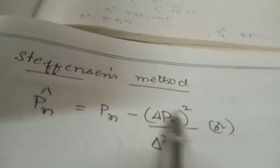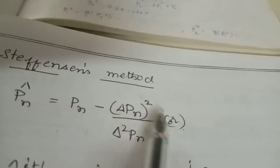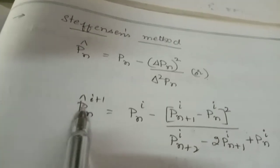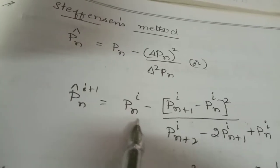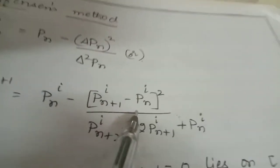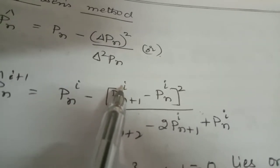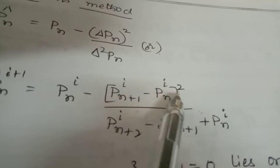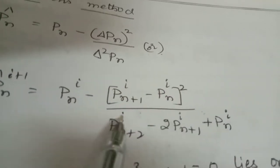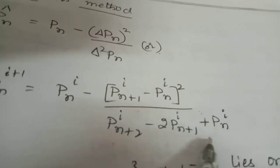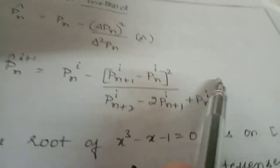Today we will see the Steffensen method. The Steffensen method formula is: P̂n = Pn − (ΔPn)² / Δ²Pn. Or we can write P̂n(i+1) = Pn(i) − (Pn+1(i) − Pn(i))² / (Pn+2(i) − 2·Pn+1(i) + Pn(i)). Now, based on this we will see one problem.